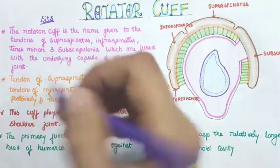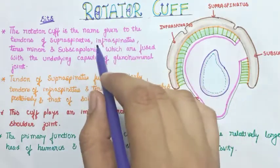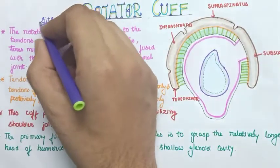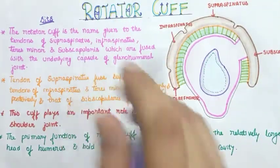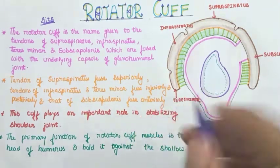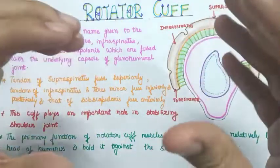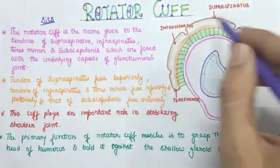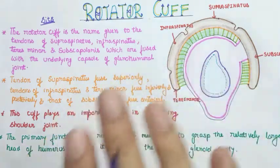Rotator cuff is the name given to the tendons of these muscles. In the upper part in the supraspinous fossa was the supraspinatus, in the infraspinous fossa was the infraspinatus, then in the lower position was the teres minor — that's why we write it in small letters. On the anterior or ventral side, on the costal surface of the scapula, the muscle was the subscapularis. These four muscles are fused with the capsule of the shoulder joint, also called the glenohumeral joint.